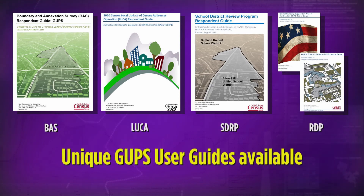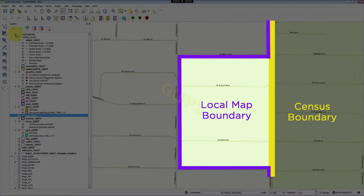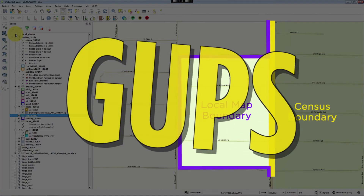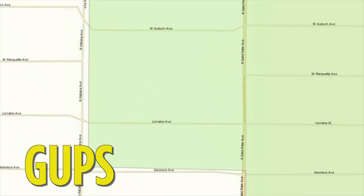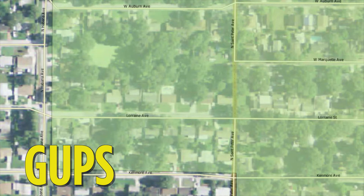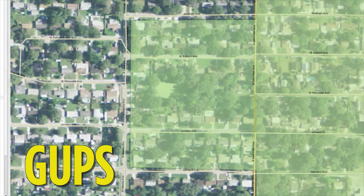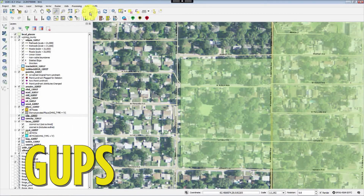As additional resources, unique user guides are available for BAS, LUCA, SDRP, and RDP. GUPS is just right — a one-stop shop for participation in Census Bureau programs which collect geographic data.